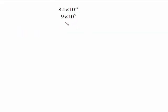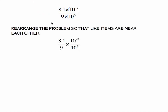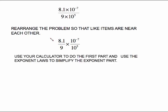A division problem, same thing. I want to rearrange this so that my like stuff is together. So I'm going to write this on top of each other and this on top of each other, which is my next step here. And then let your calculator do that arithmetic. And this is 0.9. 8.1 divided by 9 is 0.9. This is your exponent law, which says keep the base and subtract the exponents. So we keep the base of 10, subtract the exponents.